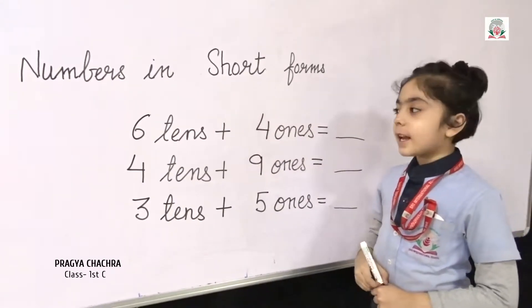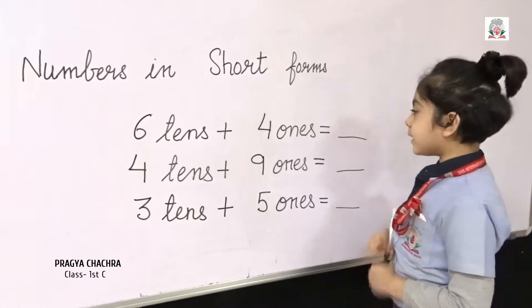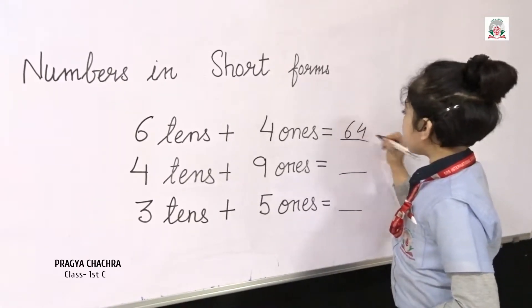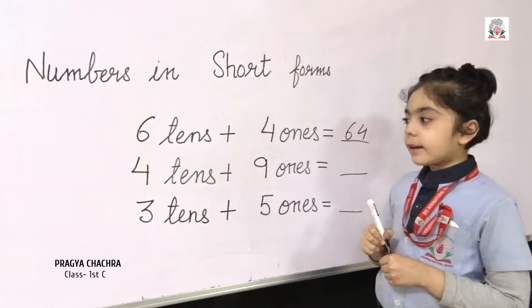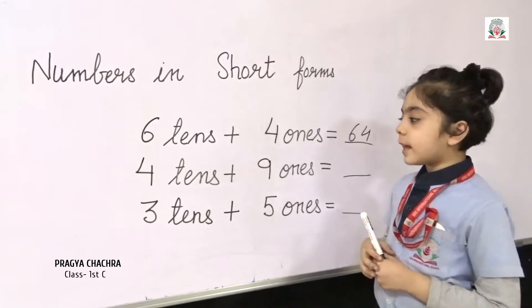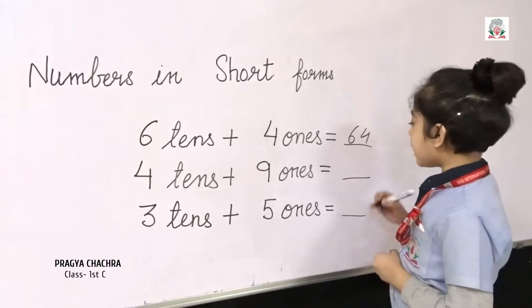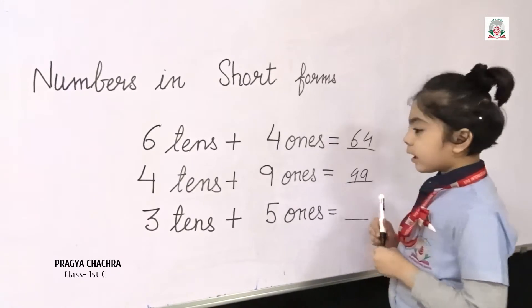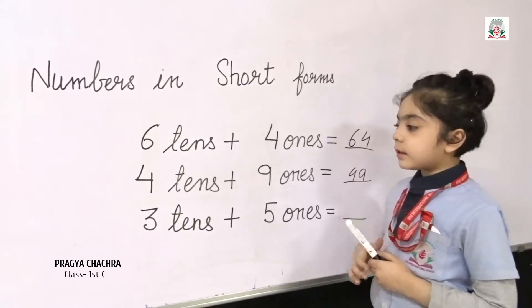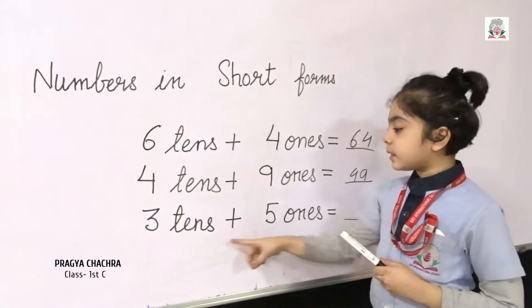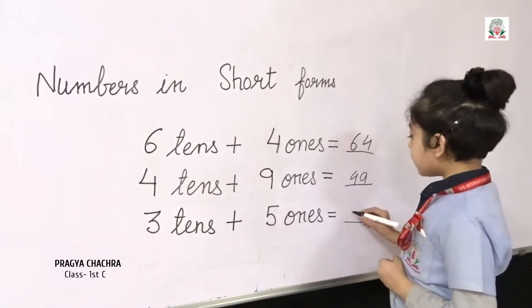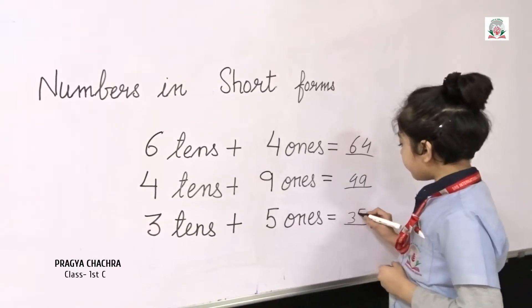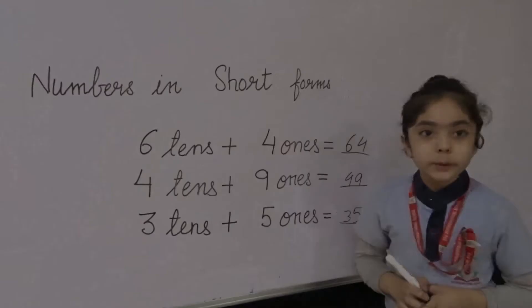6 tenths plus 4 ones is 64, and 4 tenths plus 9 ones is 49. 3 tenths plus 5 ones is 35. Thank you.